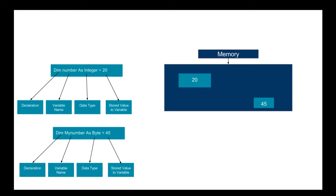Each variable, as you can see from this slide, utilizes a certain amount of space in the computer's memory. The variable 'number' holding the value 20 is declared as an integer, which uses more space in memory than the second example, 'myNumber', declared as a byte — a byte holds less space than an integer. Before declaring any variable, you have to decide what role it will play in your program and be aware of how much space it will use in memory.